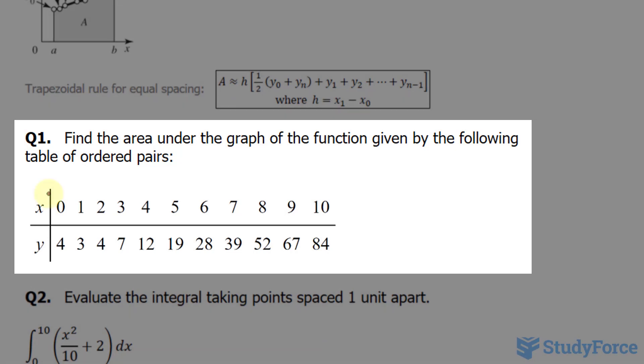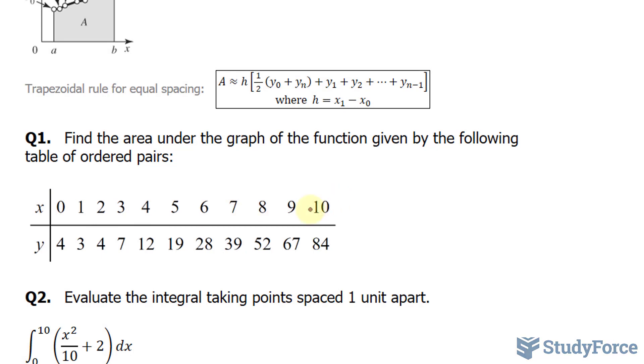Take a look at our points. We have points ranging from 0 all the way to 10, and they're equally spaced. So in this particular example, we'll be using this formula. And also keep in mind that the area that we find is just an approximate. It is not an exact area.